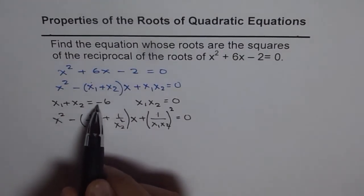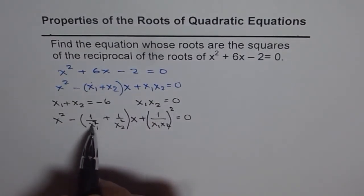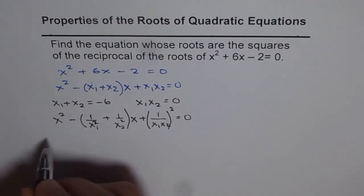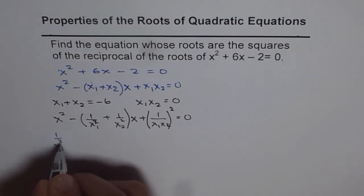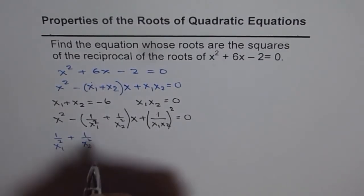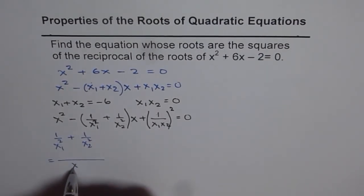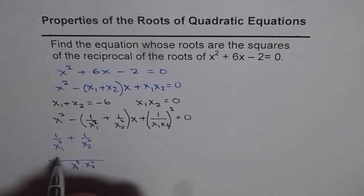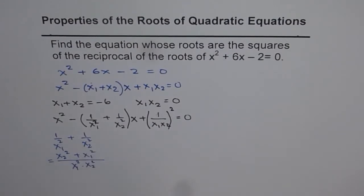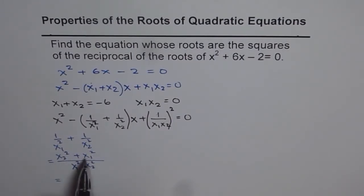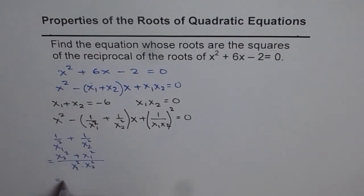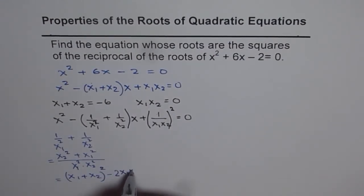We know x1 + x2 = -6 and x1·x2 = -2. We need to find the sum of their reciprocal squares: 1/x1² + 1/x2². Taking the common denominator x1²·x2², the numerator becomes x2² + x1². Now x1² + x2² can be written as (x1 + x2)² - 2·x1·x2.